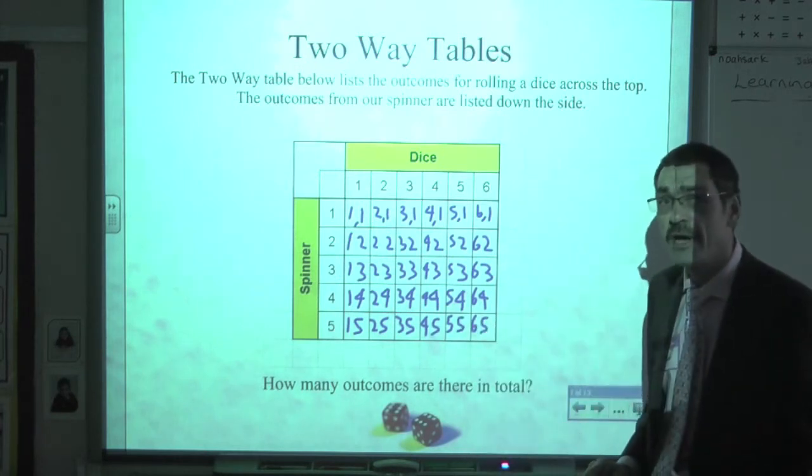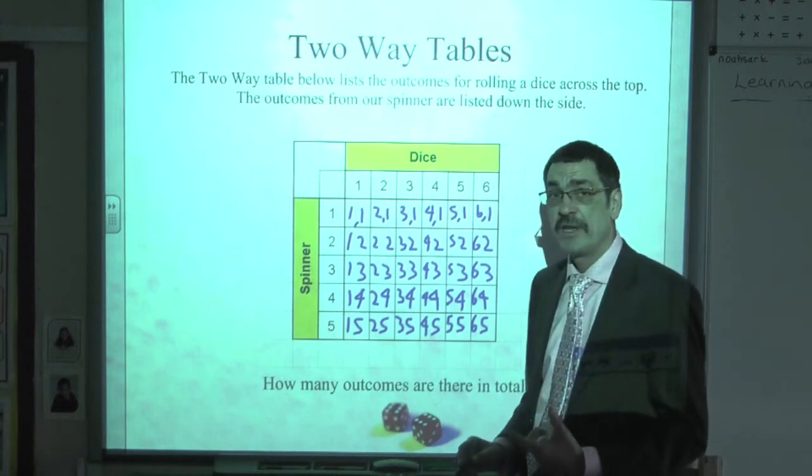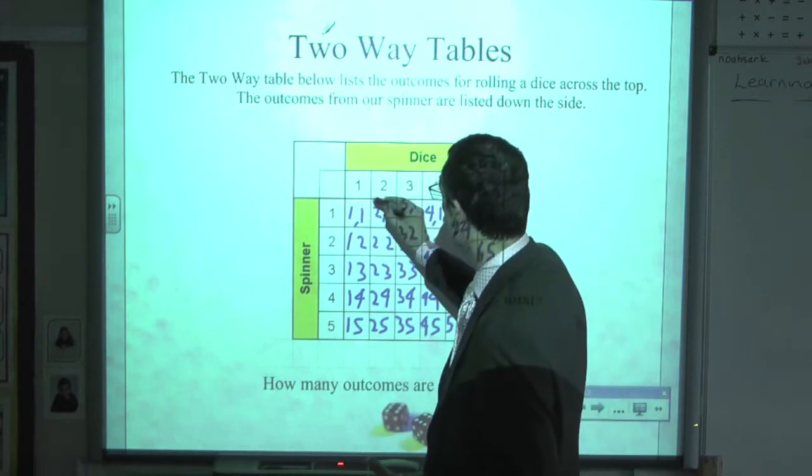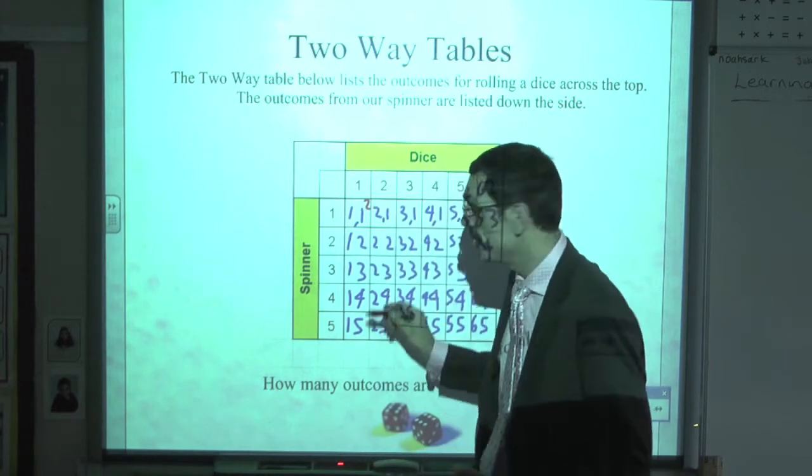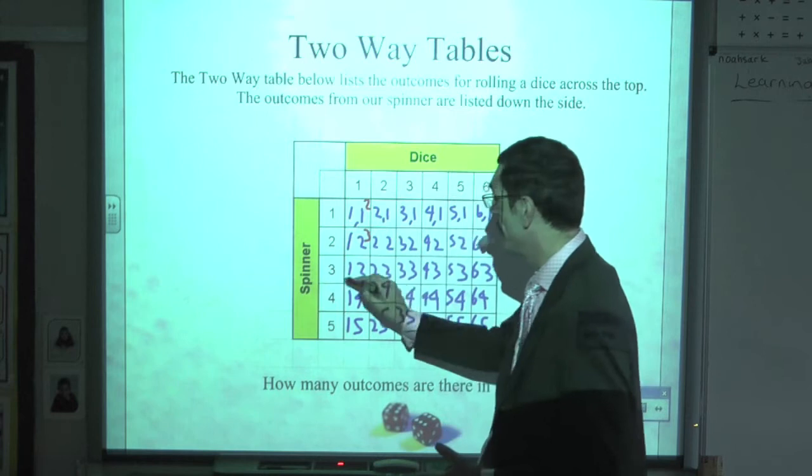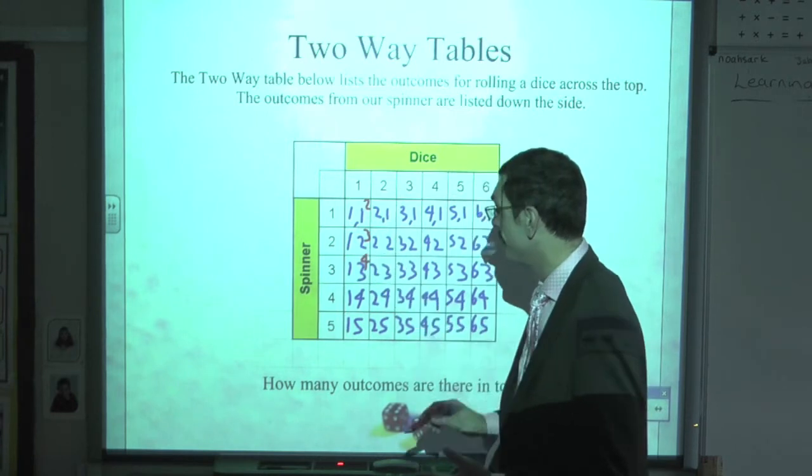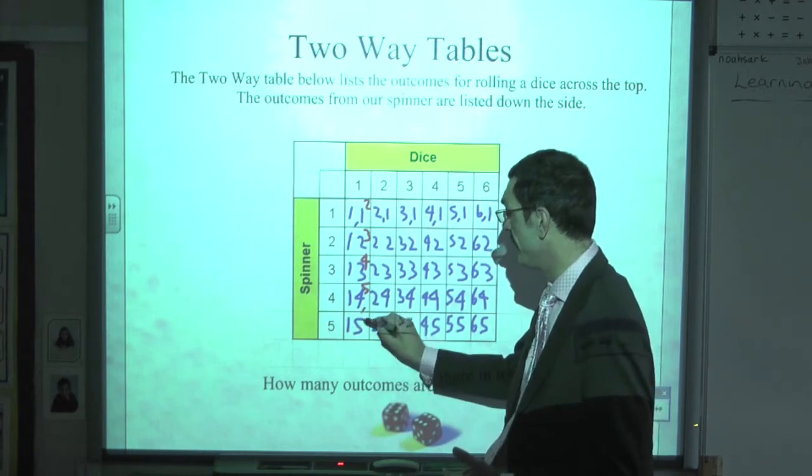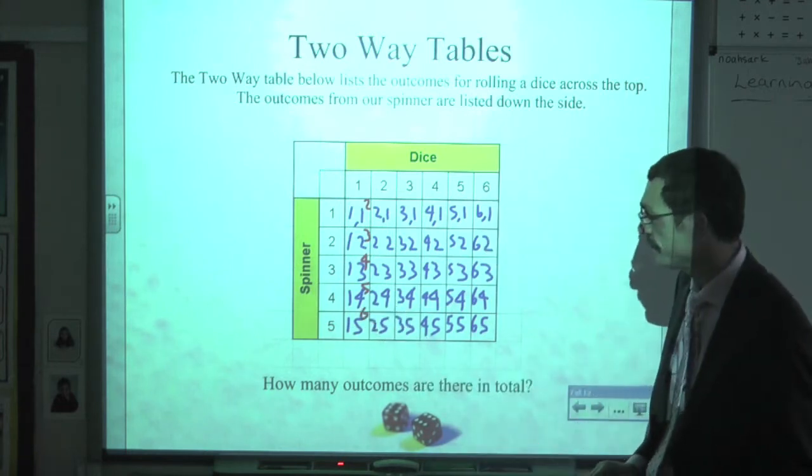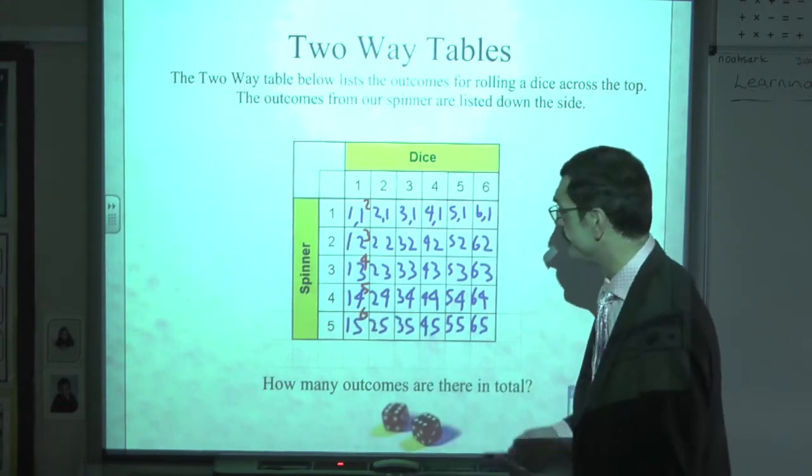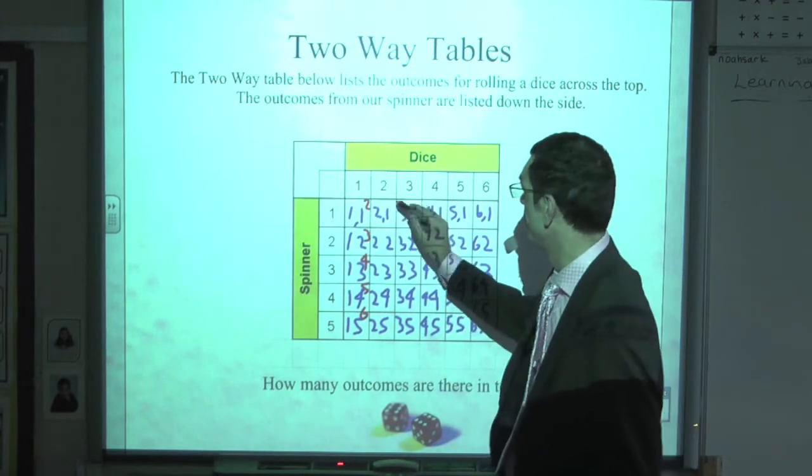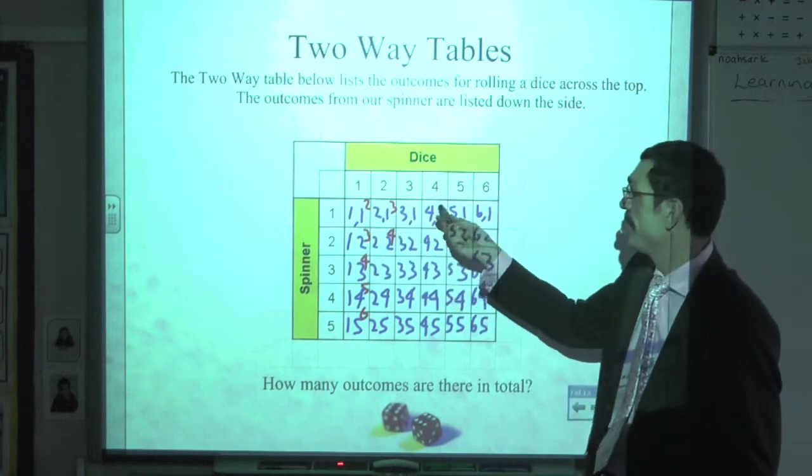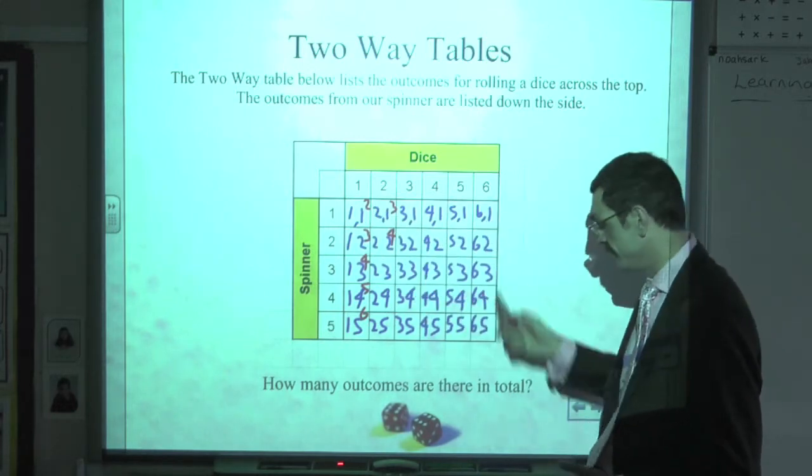So those are all of our outcomes. What we have to do now is add them together. So, have a little look on here. 1 and 1 would give us 2. 1 and 2 gives us a total of 3. 1 and 3 gives us a total of 4. 1 and 4 gives us 5. 1 and 5 gives us 6. Then adding these up: 2 and 1 is 3, 2 and 2 is 4. So this is going 2, 3, 4, 5, 6, 7. Then 3, 4, 5, 6, 7.